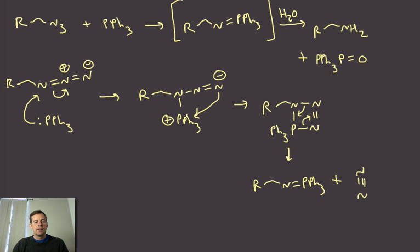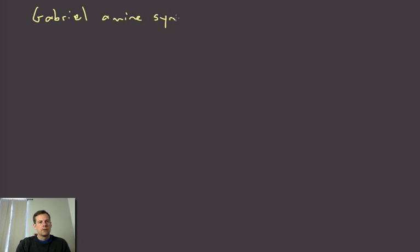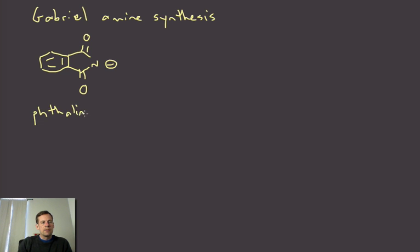And there's one more alternative to getting to amines by alkylation. And this is what's known as the Gabriel amine synthesis. So what we're going to do here is use a different surrogate for our ammonium piece. So instead of using azide, we're going to use this anion, which is called phthalimide. So you usually have it as a potassium salt. So it would be potassium phthalimide.